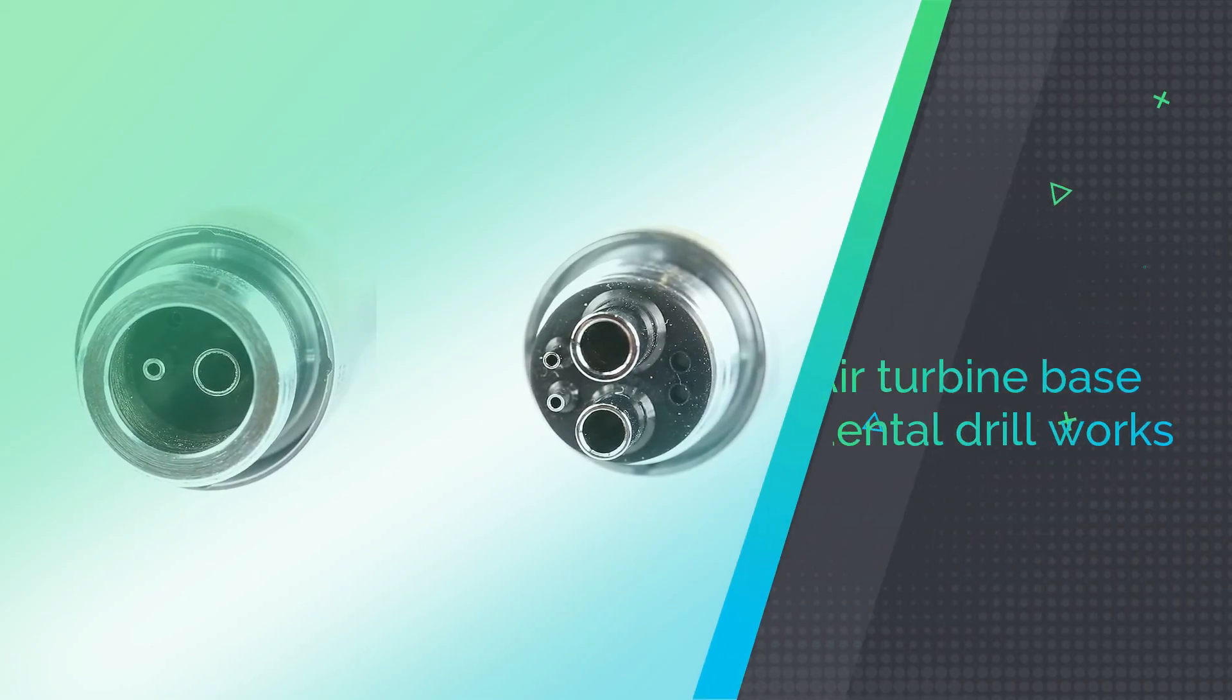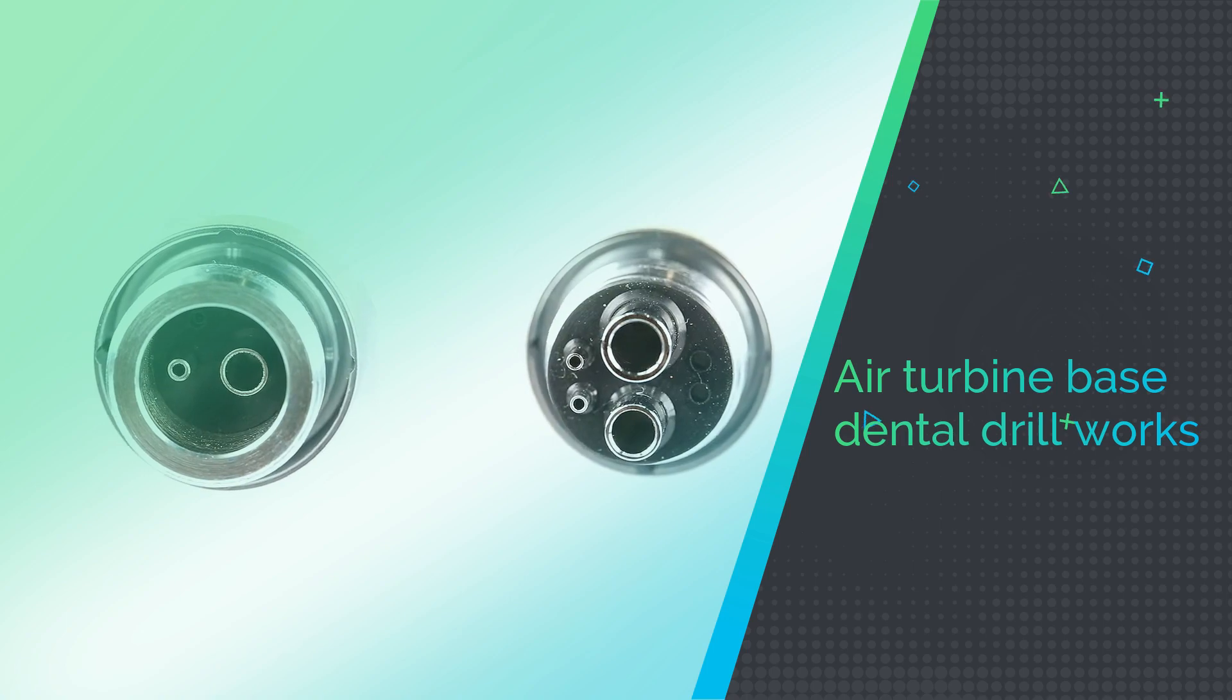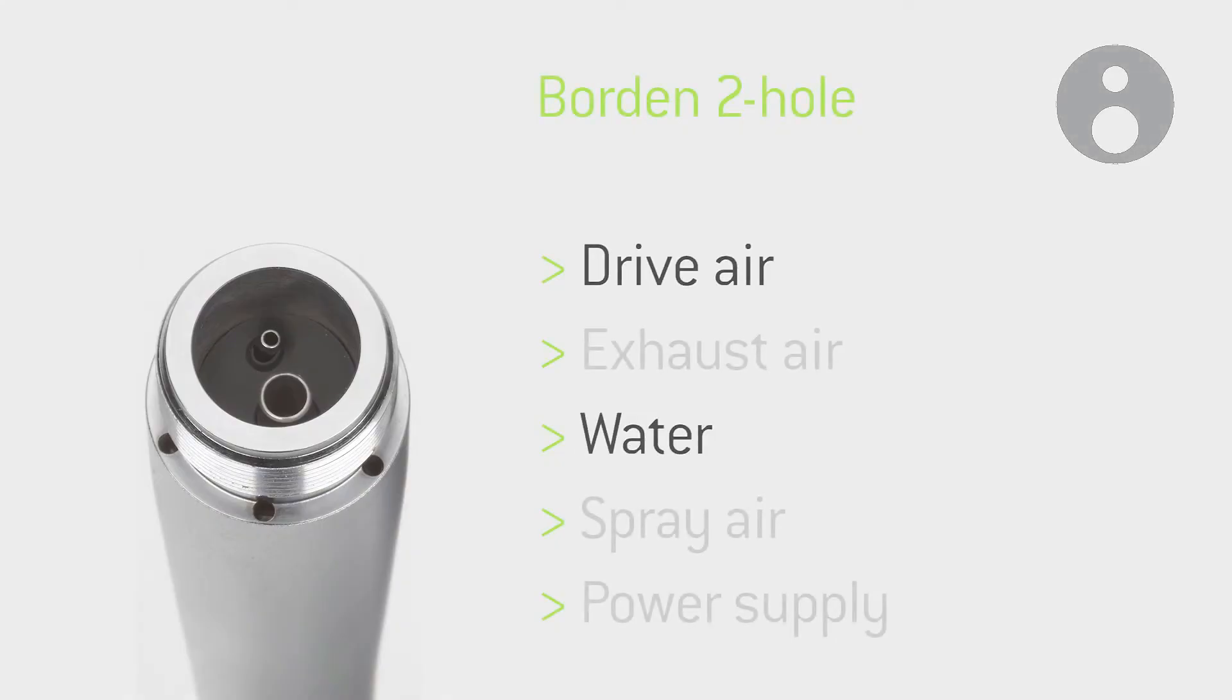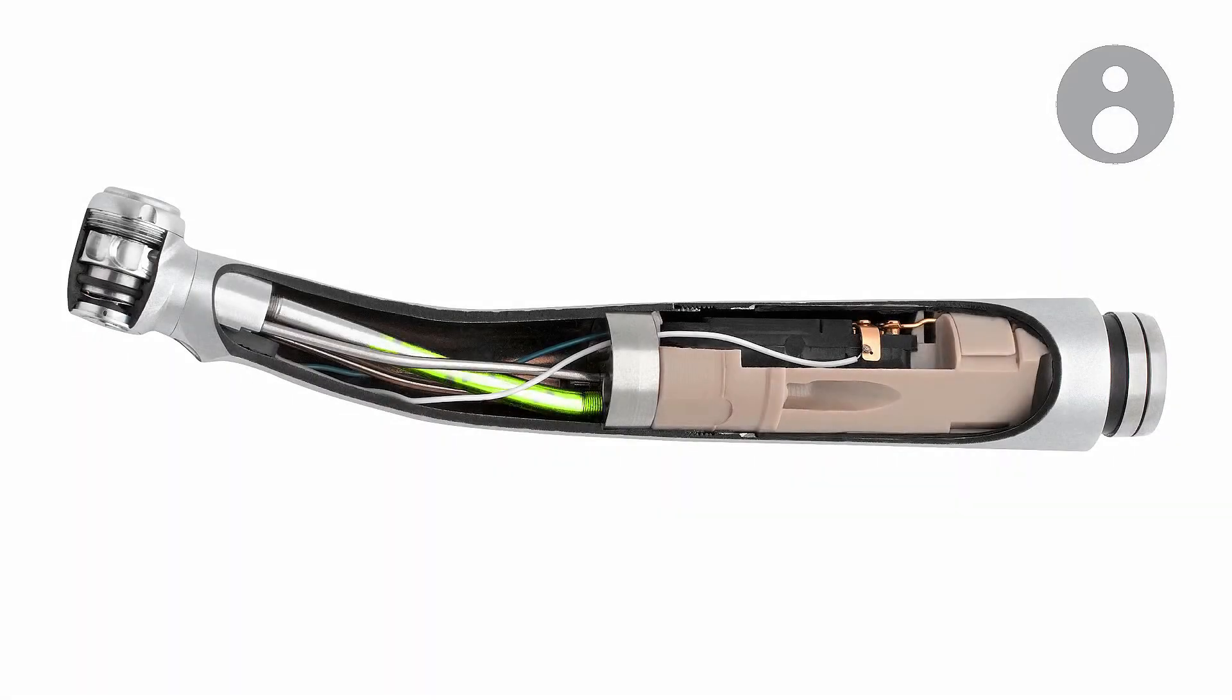So how does an air turbine-based dental drill work? Dental handpieces consist of a handle, or housing, with a small head that accommodates a dental burr, used to perform various treatment and maintenance procedures on a patient's teeth. Inside the handle are the many components that make the burr spin, and the components are powered by either compressed air or electricity.